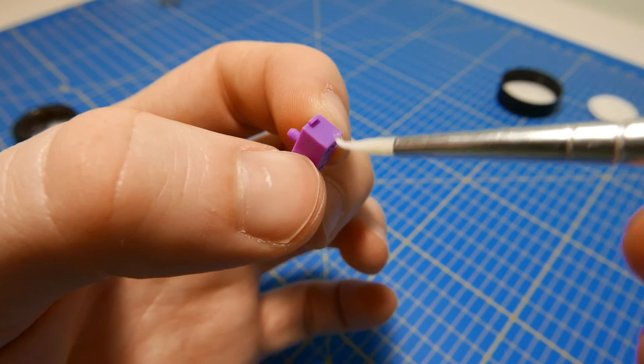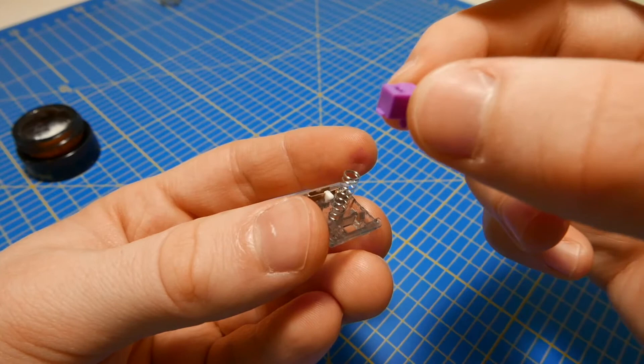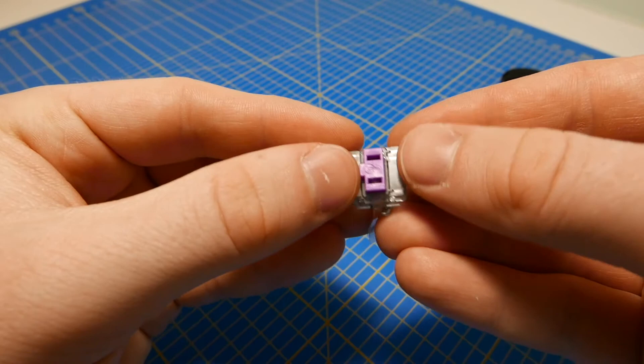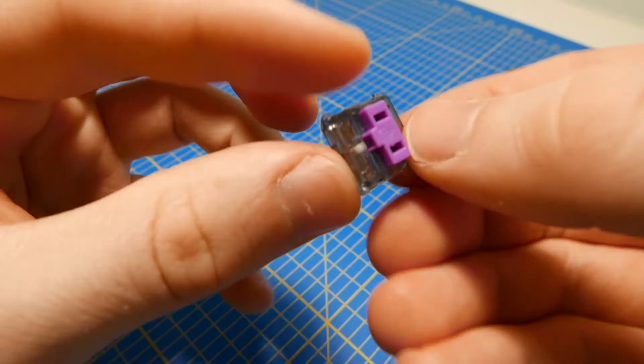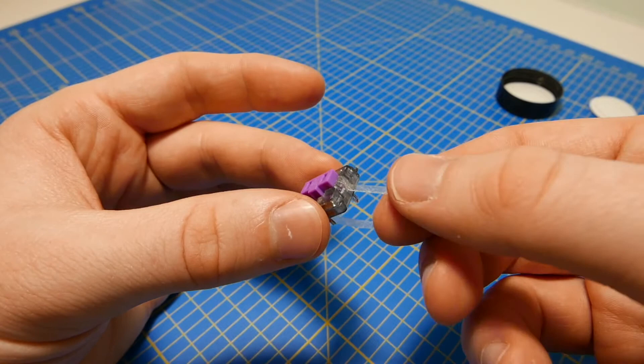Now we can reassemble the switch. Cut off the excess tape so that there is only a bit still sticking out, and then you're done.